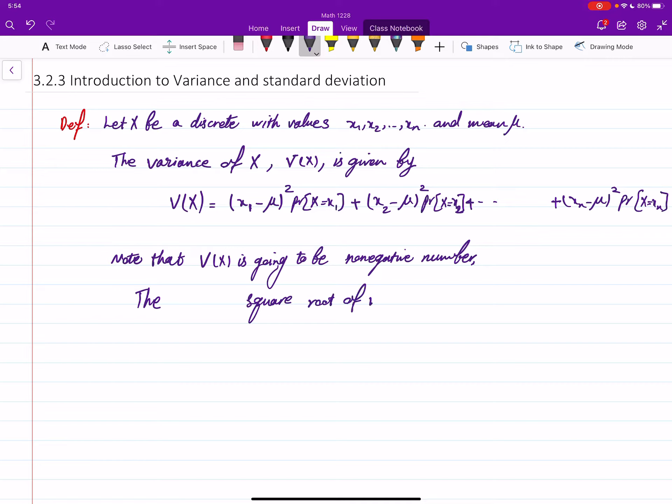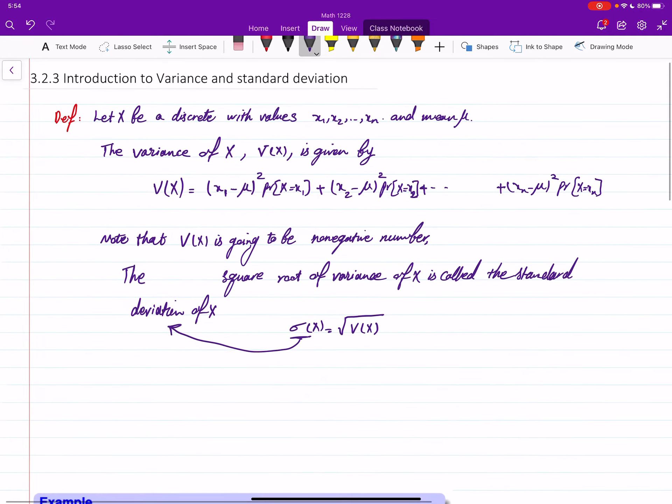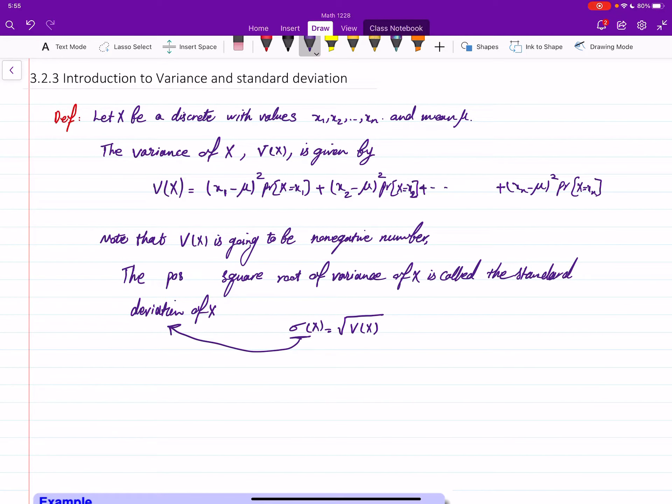When you have a non-negative number, you can take the square root of that. The square root of variance of X is called the standard deviation of X. So you find the square root of V(X), that is σ(X), that's the notation we choose for standard deviation.